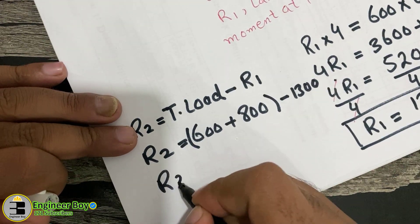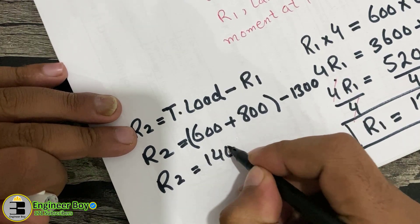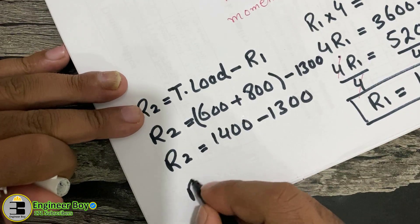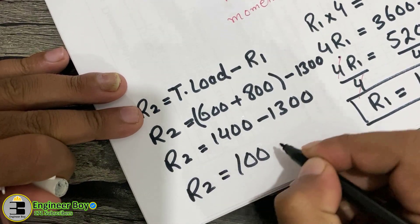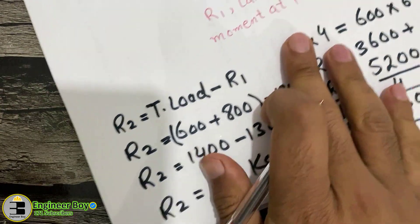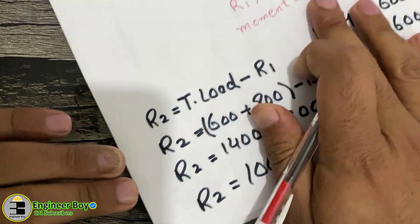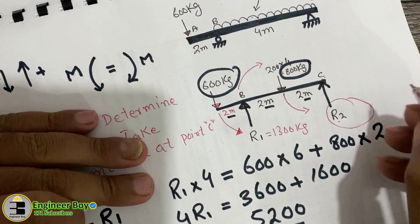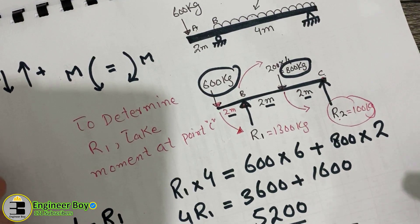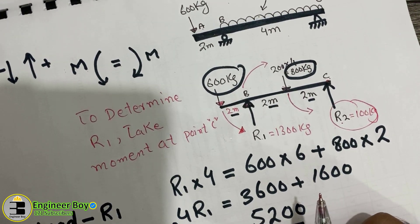R2 = 1400 − 1300 = 100 kg. So R2 equals 100 kg. That's how we determine the reactions of a single overhang beam.